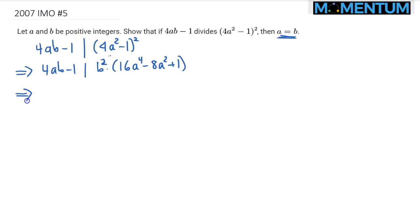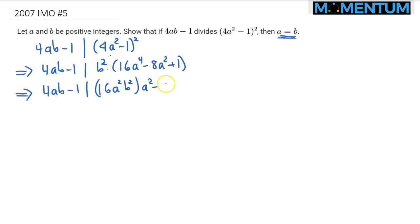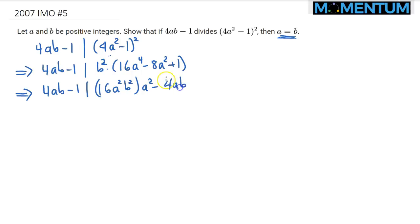And then this would further imply — we still have 4AB minus 1 divides — we would get 16A squared B squared times A squared minus 8A squared B squared. Actually, let's keep the 4AB. I'll just multiply it by 2AB, so that would give us 8A squared B squared, plus B squared.